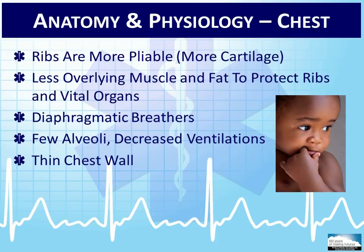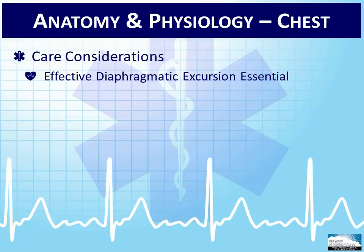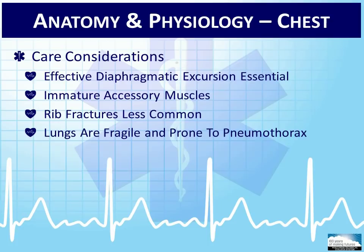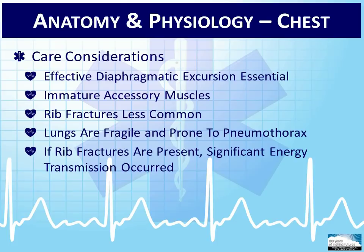When managing the pediatric patient, it is important to ensure effective movement of the diaphragm to sustain adequate ventilation. Rib fractures are less common in the pediatric patient given a higher proportion of cartilage to bone, but any trauma to the chest can cause significant damage to underlying internal organs because the flexible ribcage provides less protection than a fully developed and rigid adult ribcage. Lungs are fragile and prone to tissue damage, pneumothorax, or a collapsed lung. If rib fractures are present in the pediatric patient, consider the likelihood of significant energy transmission and evaluate for multi-system trauma.